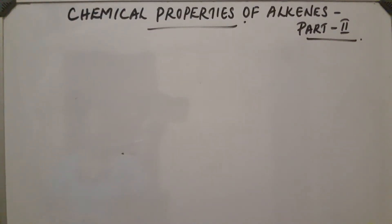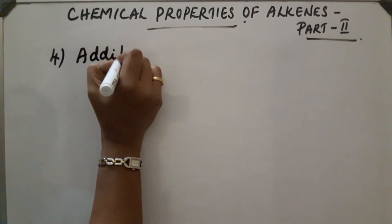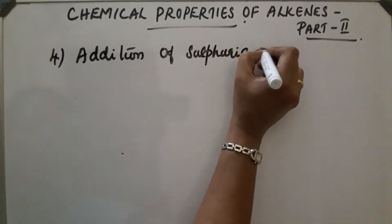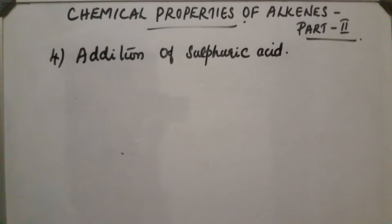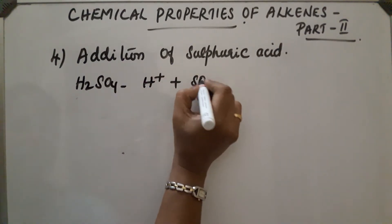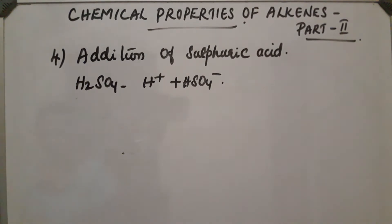Chemical properties of alkenes, part 2 — this is the continuation of the last class. The fourth property is addition of sulfuric acid. Sulfuric acid is H₂SO₄. This is an electrophilic addition reaction and it follows Markovnikov's rule. H₂SO₄ dissociates into H⁺ and HSO₄⁻. The HSO₄⁻ will add to the carbon atom containing the positive charge in the carbocation.